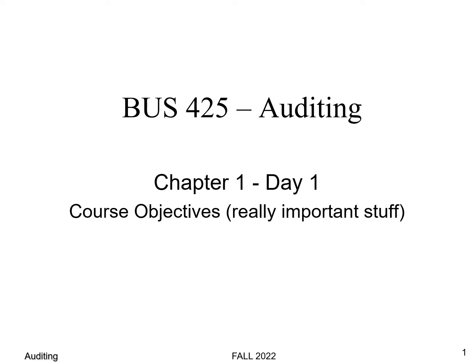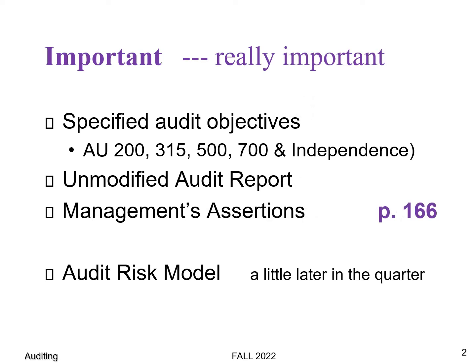I want to apologize — these first two days aren't going to coordinate very well with the book. Things will get better in day three and day four, but bear with me. There are four things that I've built this course around: a specific audit objective, the unmodified audit report, and management assertions. Those three things are going to be on the first test — they're foundational and we'll use them throughout the entire quarter. The audit risk model will come in after the first test.